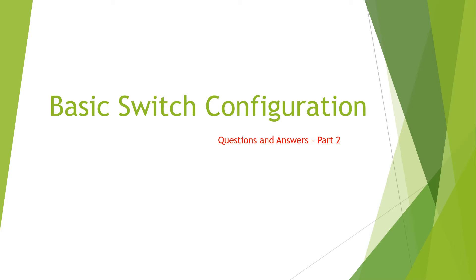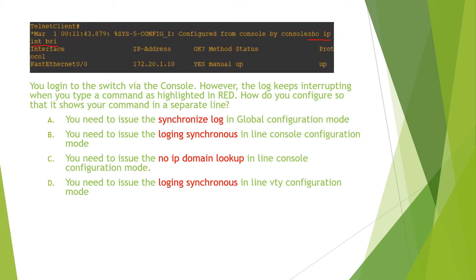Let's review basic switch configuration with questions and answers, part 2. The question reads: you log in to the switch via the console, however the log keeps interrupting when you type a command, as highlighted in red. How do you configure so that it shows your command in a separate line?